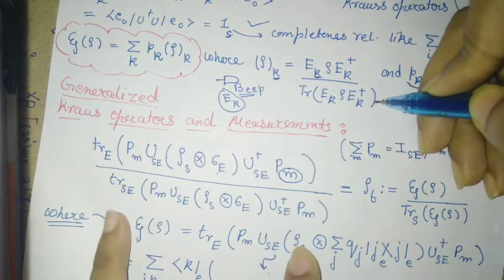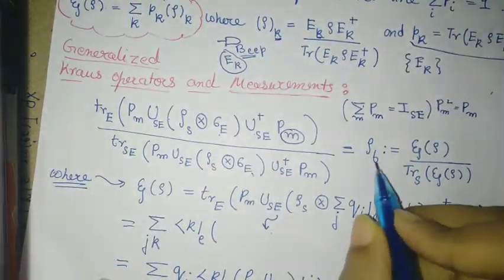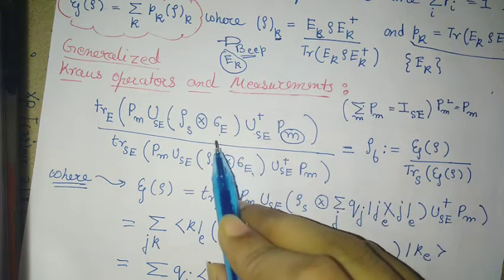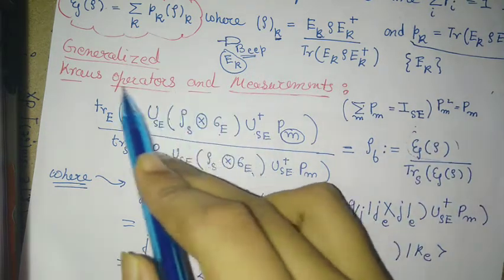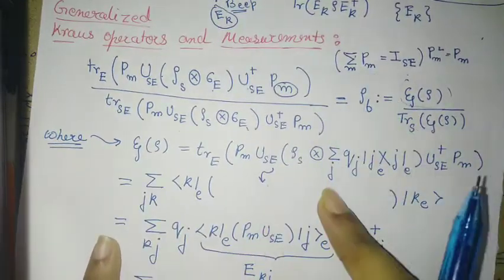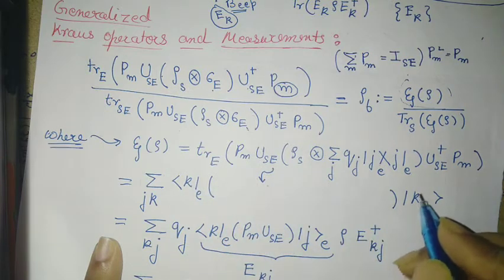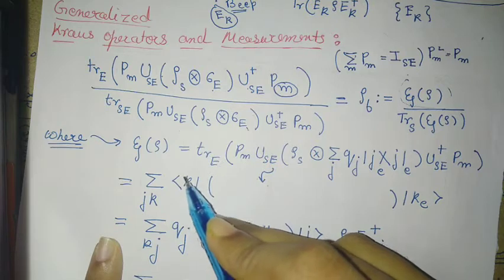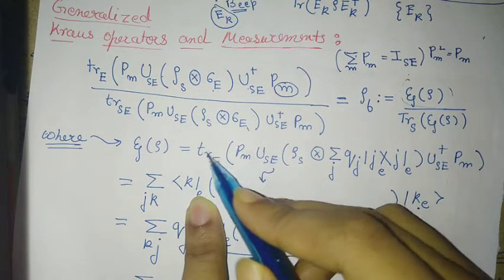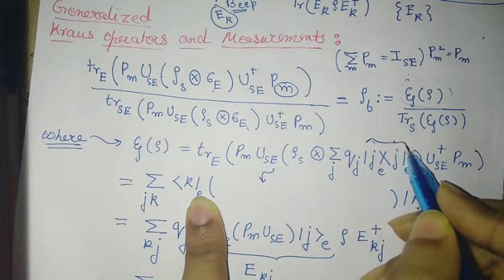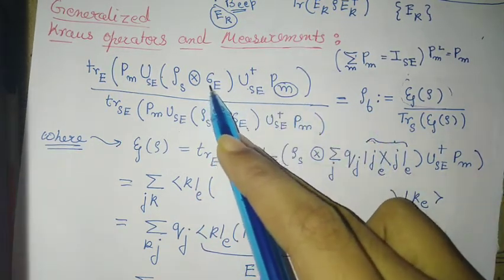So ρ_f is obtained where the lower part is the entire tracing-out normalization — this ensures probabilities sum to one. This is the probability of getting this state. We define ρ_f equivalently through ε(ρ), so ε(ρ) needs to be defined as the numerator part. We define ε(ρ) as this numerator and use the tracing out as the action of an orthonormal basis |k_e⟩, where {|k_e⟩} is an orthonormal basis set. This entire sum over k is the trace operation, and this part is just the spectral decomposition of σ_e, the environment part.